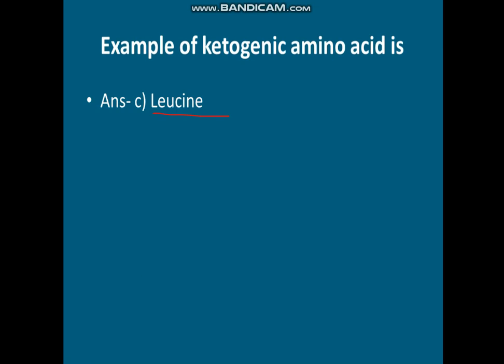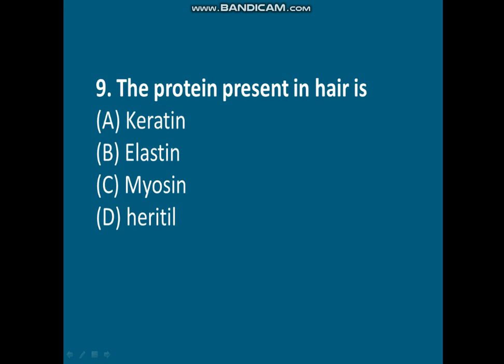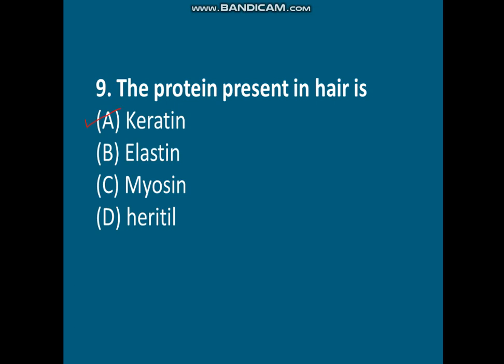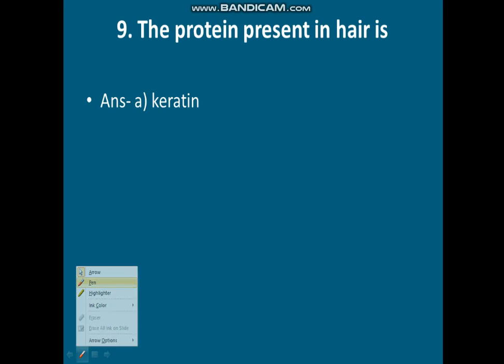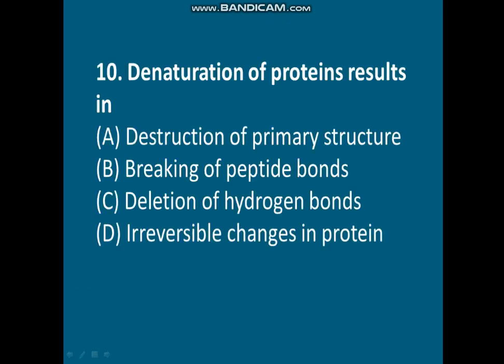Question nine: the protein present in hair. We know proteins are present in nails as well as hair. Options are: A) Keratin, B) Elastin, C) Myosin, D) Heritil. The correct answer is option A, Keratin. Keratin is the protein found in hair.